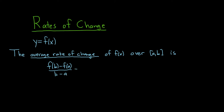So again, this is the change in y over the change in x. You can think of the change in y as delta y — that's the Greek letter delta — and then over delta x, that's the change in x. It's a triangle shape called delta.